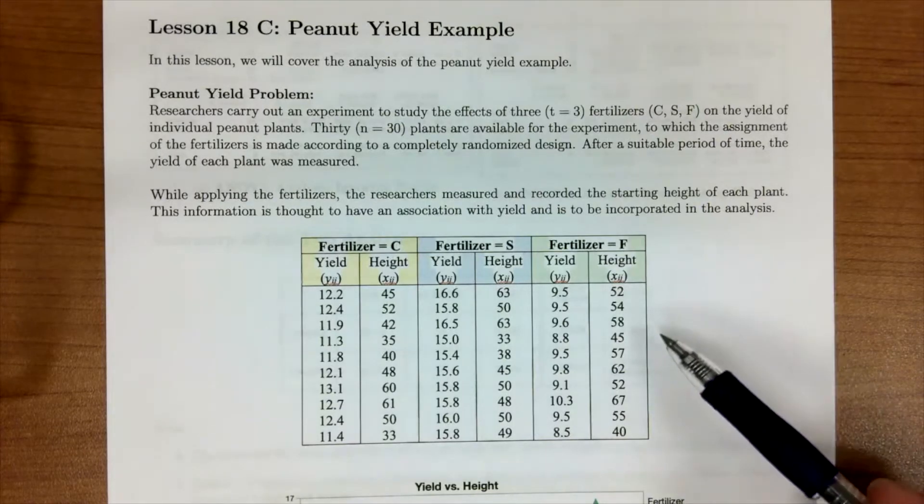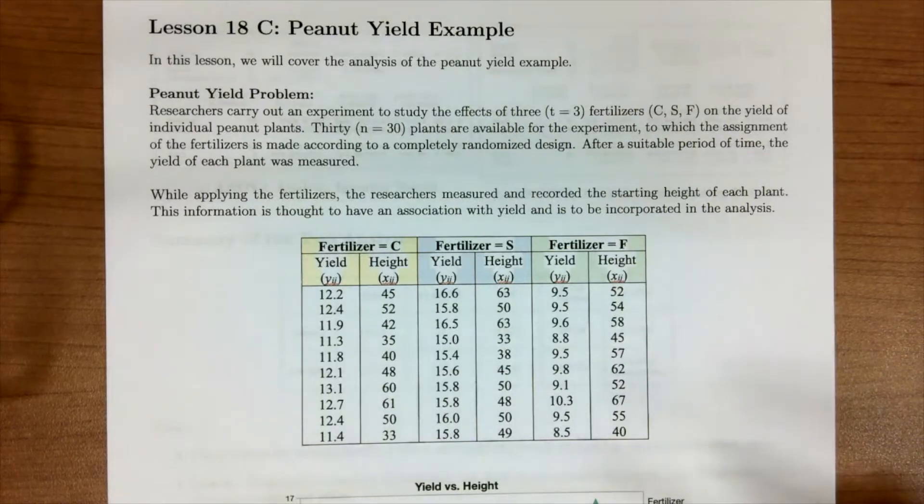Here I'm showing you the data we'll be using. Recall that not only do we have a categorical variable fertilizer, we also have a continuous covariate with height of the peanut plants. We're going to see how we carry out the analysis using what we've talked about in the last two lessons.